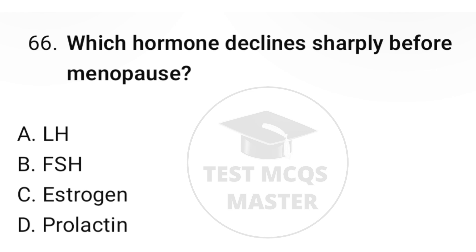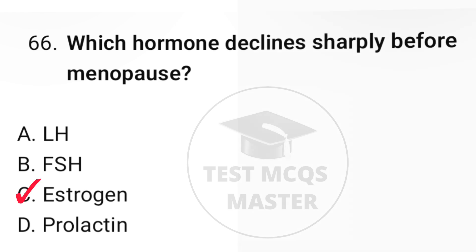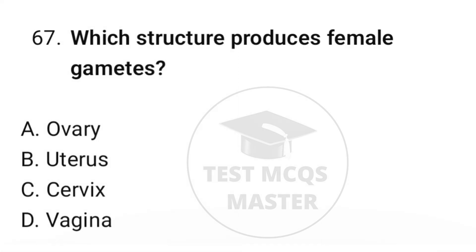Question number sixty-six: which hormone declines sharply before menopause? The correct option is C, estrogen. Question number sixty-seven: which structure produces female gametes? The correct option is A, ovary.